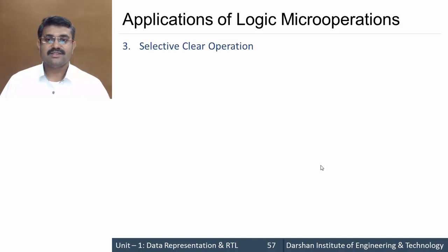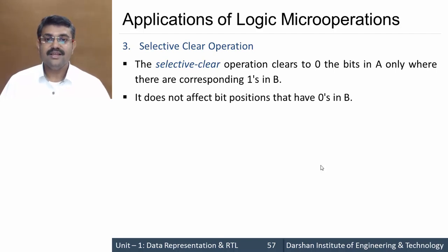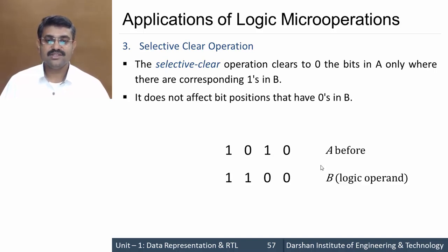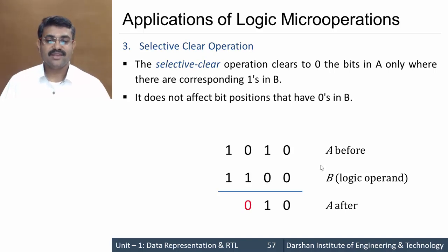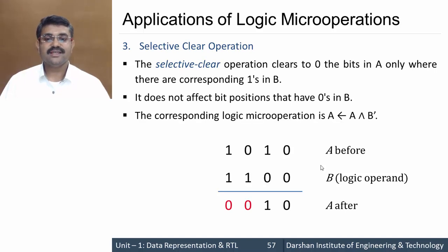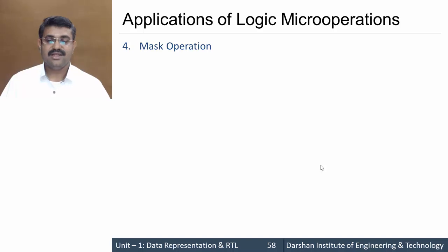Selective clear operation clears to 0 the bits in A where there are corresponding ones in B. For example, A=1010, B=1100. From LSB: B has 0 so A remains 0; next B has 0 so A remains 1; next B has 1 so A becomes 0; next B has 1 so A becomes 0. This operation is achieved by means of A AND B complement micro operation.